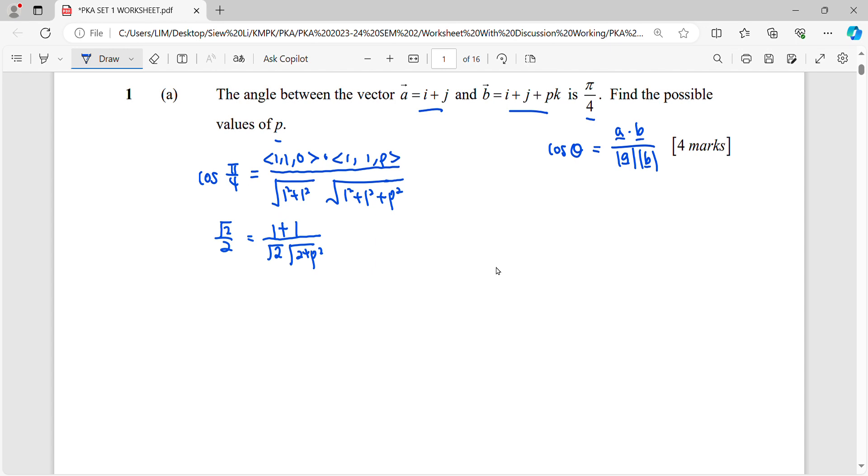Alright, so after this we need to find your p means we need to solve this equation. Cross multiply. So square root 2 times square root 2 will get you 2.